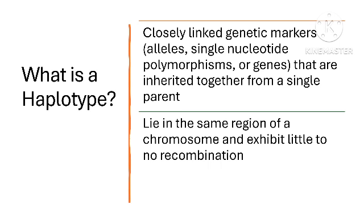To understand haplotype analysis, it is essential to first define what a haplotype is. A haplotype consists of a group of genes or genetic variations — usually single nucleotide polymorphisms — that are located closely together on a chromosome and tend to be inherited as a block. These genetic variations are often associated with particular traits or diseases. As they are inherited together, haplotypes can provide insights into both genetic history and susceptibility to certain conditions.